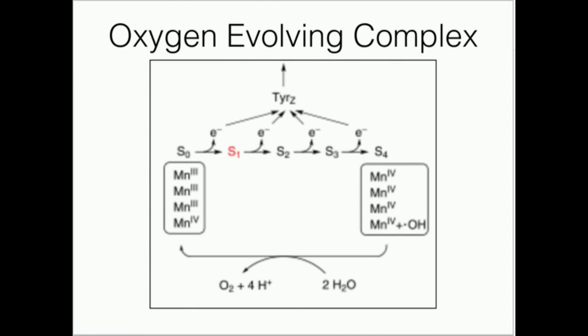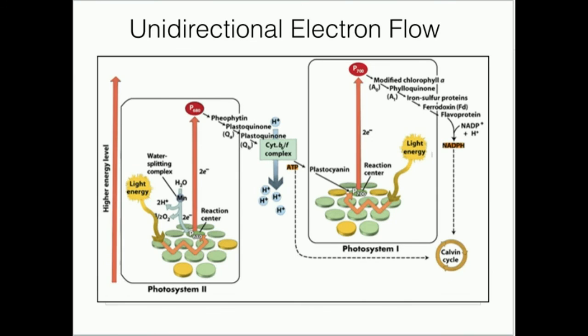And these electrons will only go to the P680 once it's given up an electron. So the main thing to understand is this is a one at a time process. This electron goes to P680 once P680 gives up an electron, and then this electron goes to P680 once P680 has given up an electron, and on and on. But this water is just used to give its electrons back to the oxygen evolving complex, and then oxygen bubbles off as a waste product.